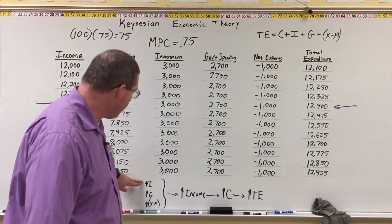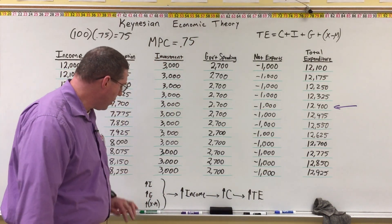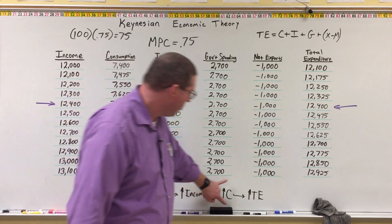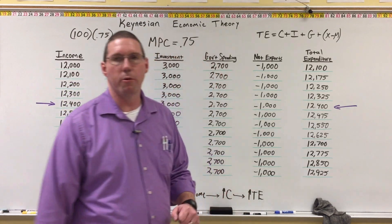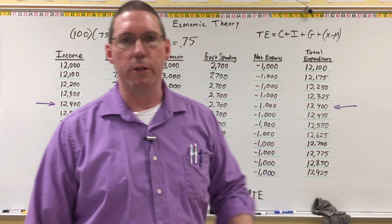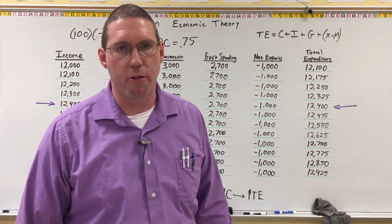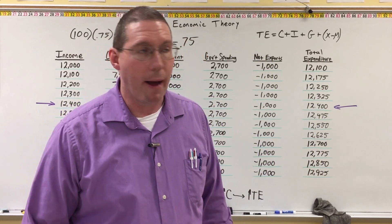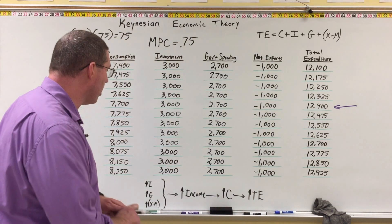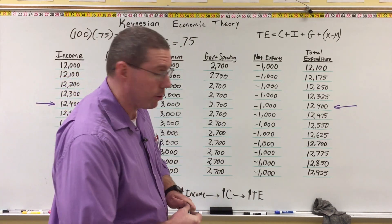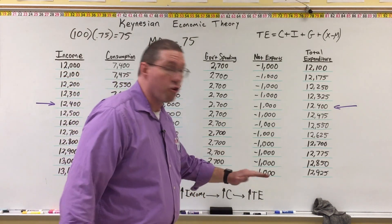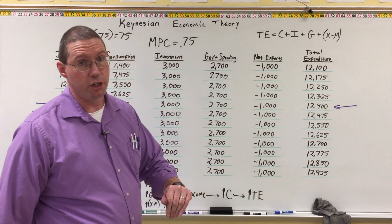And the same thing works in reverse: if we decrease investment, government spending, or net exports, it'll decrease income, decrease consumption, decrease total expenditure, and that will bring down real GDP. But his primary theory was not on decreasing real GDP — his primary theory was on increasing real GDP.